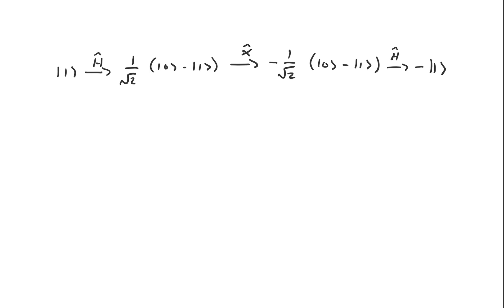From this, it's pretty easy to see how you would do it for the state |0⟩. You apply a NOT gate to the state |0⟩, which creates the state |1⟩. We go through the same process to get a negative coefficient in front of the state |1⟩, and then we apply a NOT gate at the end. That gives you a negative 1 in front of the state |0⟩. So this is how you get a negative sign in front of the basis states for a single qubit system.